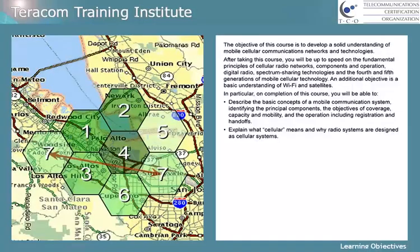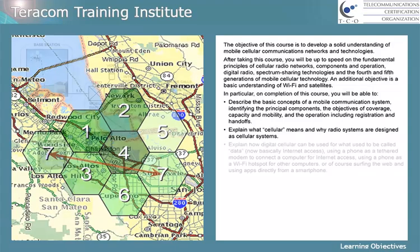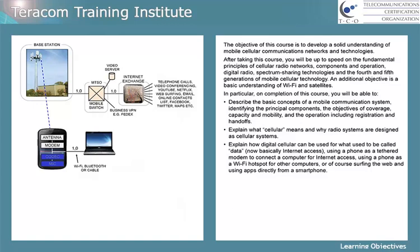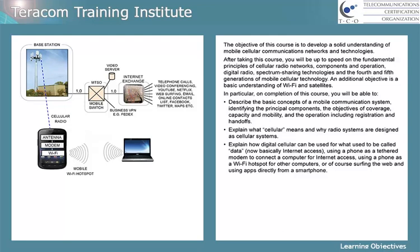You'll be able to explain what cellular means and why radio systems are designed as cellular systems. You'll be able to explain how digital cellular works and how it can be used for what used to be called data — which is now basically internet access — using a phone as a tethered modem to connect a computer for internet access, using a phone as a Wi-Fi hotspot for other computers to connect through, or surfing the web and using apps directly on a smartphone.